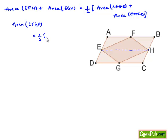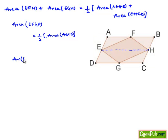The area of parallelogram AEHB and the area of parallelogram EHCD together give the total area of parallelogram ABCD. Therefore, finally we can say that the area of EFGH is equal to half times the area of parallelogram ABCD. This is the required proof, and it is hence proved.